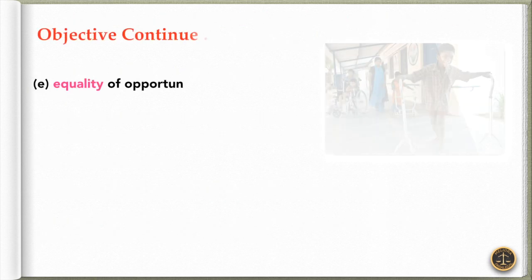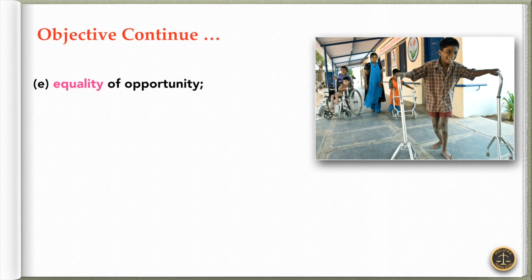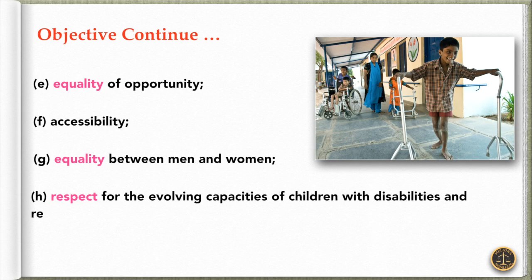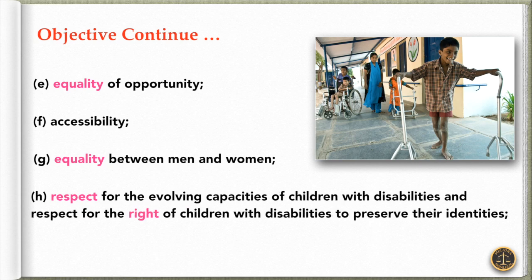Further objectives include equality of opportunity, accessibility, equality between men and women, respect for the evolving capacities of children with disabilities, and respect for the rights of children with disabilities to preserve their identities.